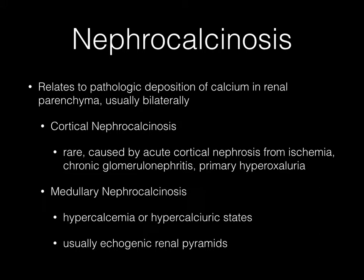Nephrocalcinosis relates to pathologic deposition of calcium in the renal parenchyma and is usually bilateral. Cortical nephrocalcinosis is rare, caused by acute cortical nephrosis from ischemia, chronic glomerulonephritis, and primary hyperoxaluria. Medullary nephrocalcinosis is more common, related to hypercalcemic or hypercalciuric states, and is usually manifest as echogenic renal pyramids on ultrasound.